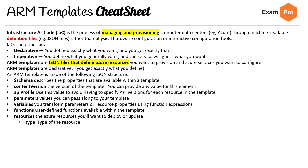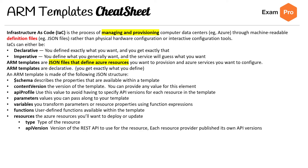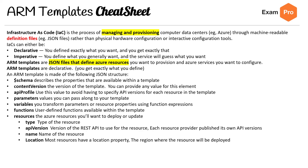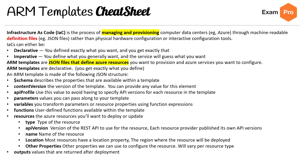Under resources, you have the type of resource, API version, the name, the location, and other properties which can be a bunch of different things — so there's no consistency there. And then outputs, which are values that are returned after deployment so you can do things with them programmatically. So there you go, that is the ARM templates cheat sheet.